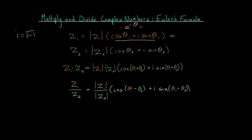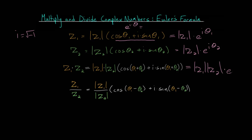We can rewrite a number in its exponential form as the magnitude of that complex number multiplied by its direction, E to the I times theta 1. And likewise, we can do the same thing for Z2. When we multiply these numbers, we still multiply their magnitudes, but we can use exponent properties to essentially add the two angles, getting E to the I times theta 1 plus theta 2. This is a more compact way of writing the same expression in polar form — this form is known as exponential form.